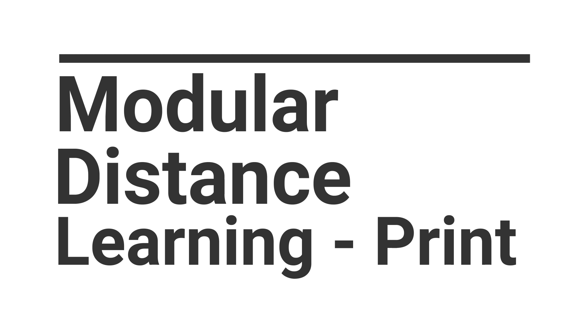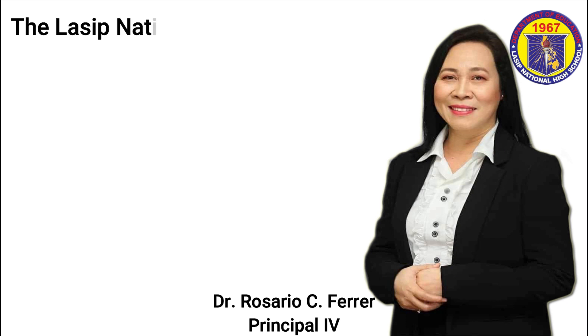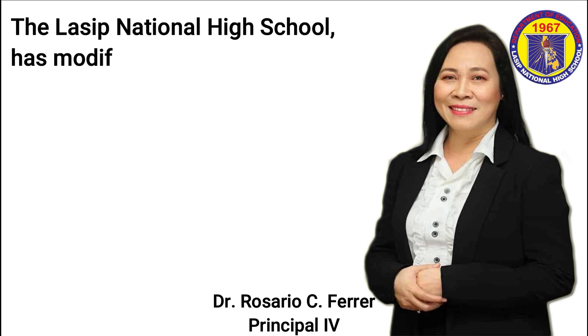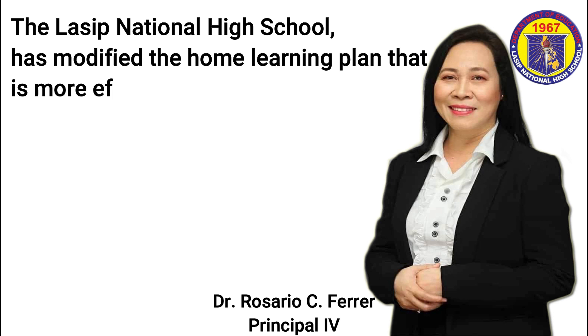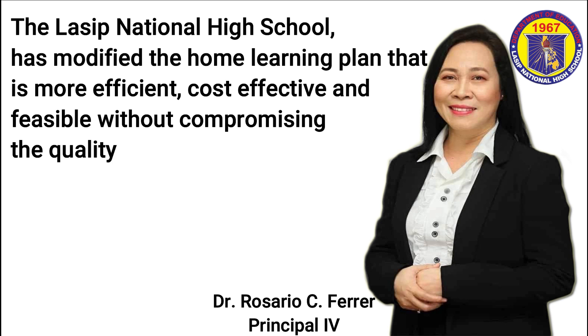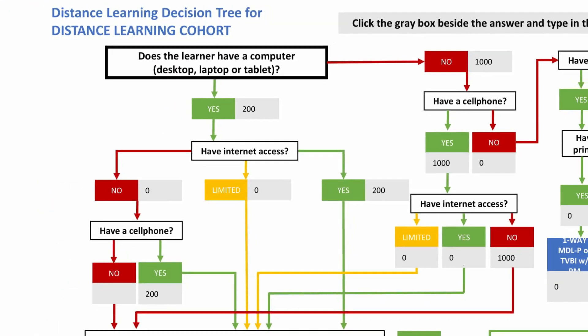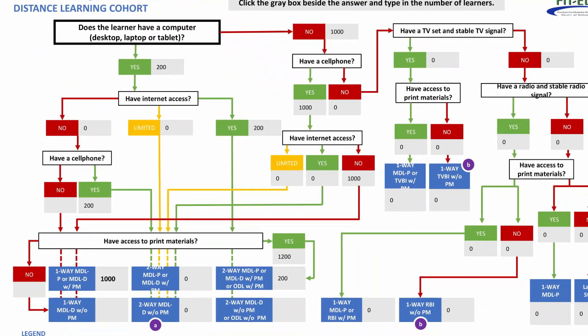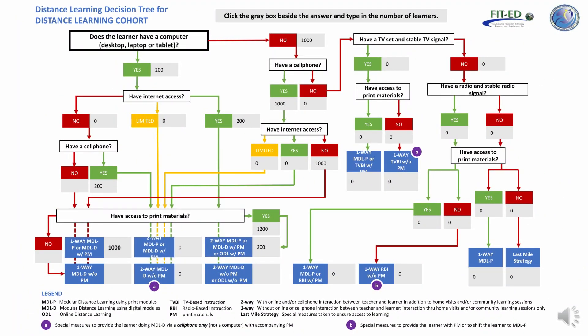Our second distance learning modality is modular distance learning print. The LESP National High School has modified the home learning plan to be more efficient, cost-effective, and feasible without compromising the quality of education. As you can see in our decision tree, we have 1,200 enrolled learners — 200 of them chose online distance learning with print material, and the other 1,000 learners chose modular distance learning with print material.